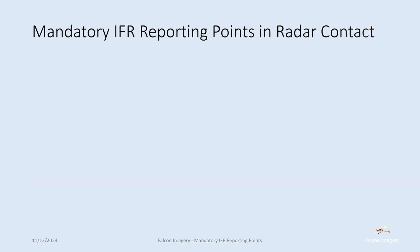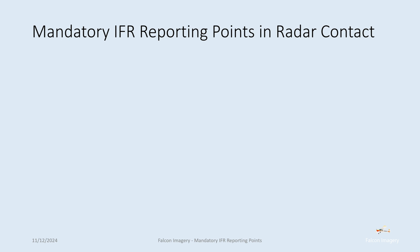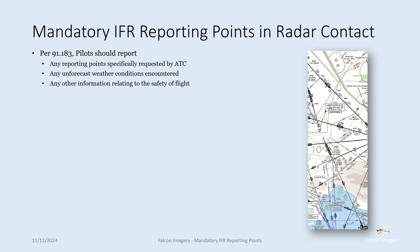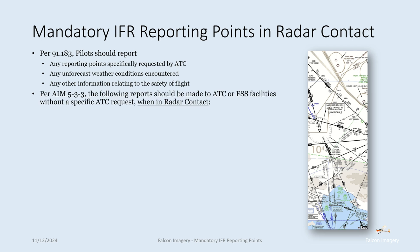Now we'll get into specifically the mandated IFR reporting points associated with being in radar contact. Per 91.183, pilots should report any reporting points specifically requested by ATC, any unforecasted weather conditions encountered, and any other information relating to the safety of the flight. Per AIM 5-3-3, the following reports should be made to ATC or flight service station facilities without a specific ATC request when in radar contact.